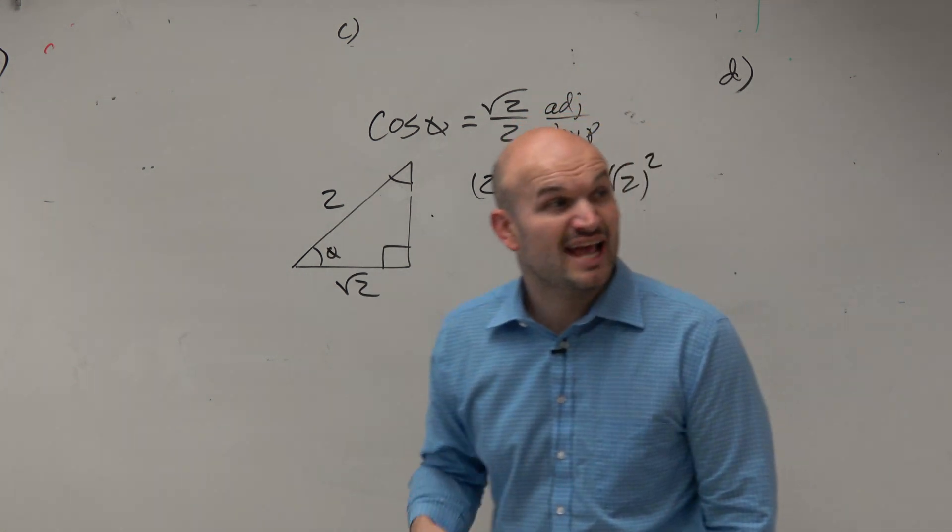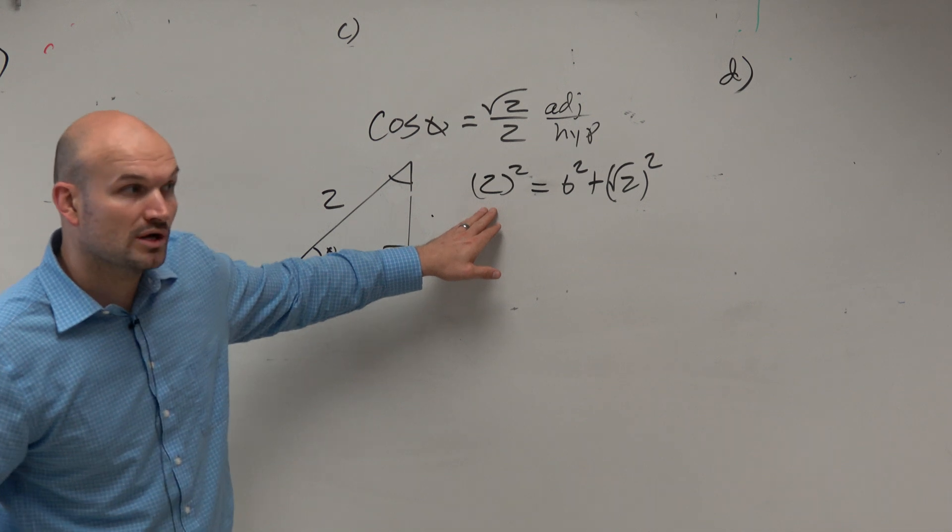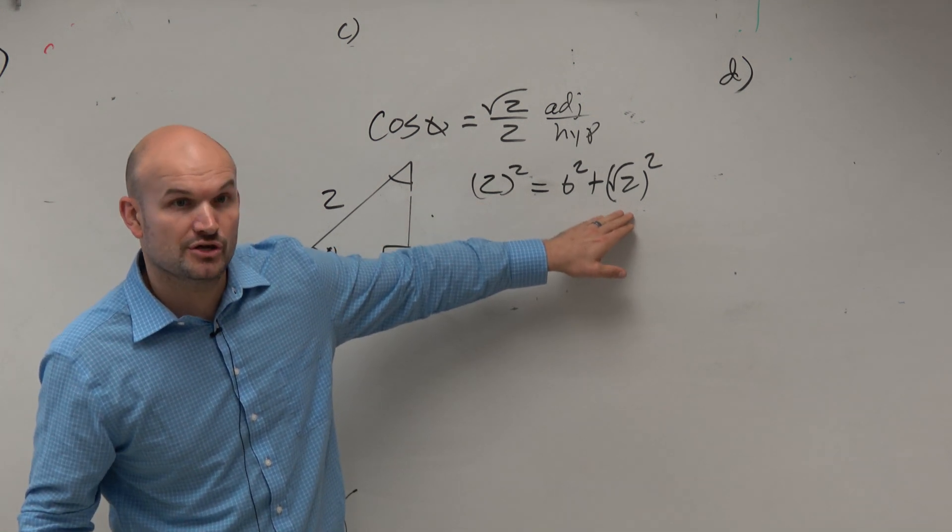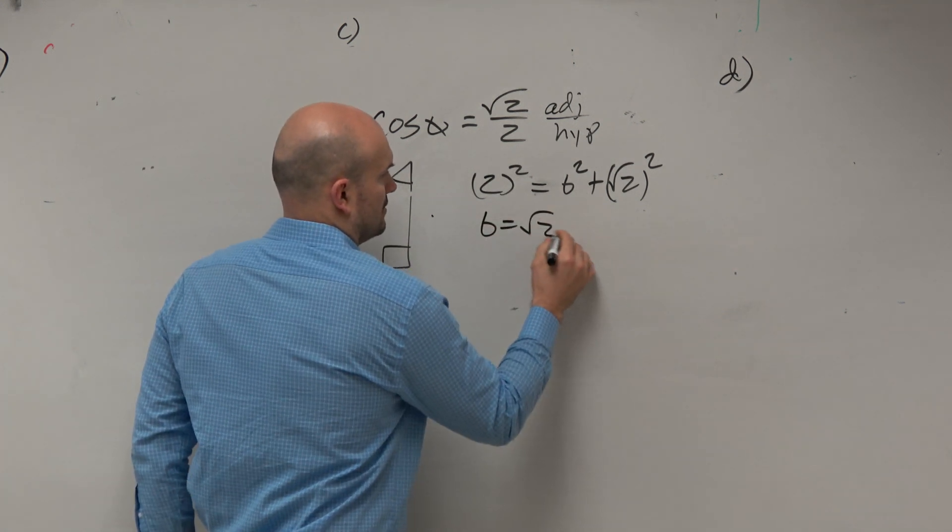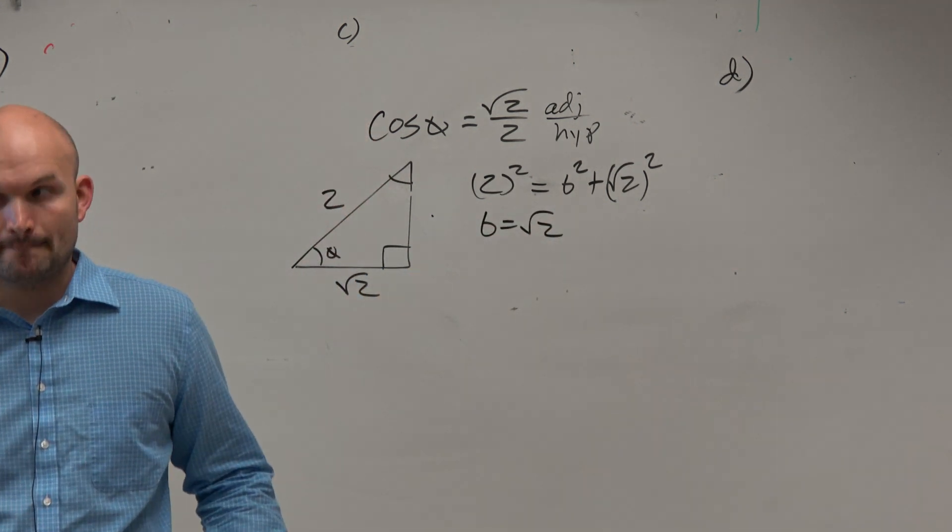Hopefully, we can start doing a little bit of this in our head. Right? This gives us 4. Square root of 2 squared is 2. 4 minus 2 is 2. Square root.